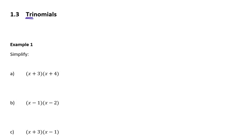And now we're starting my favorite, which is a trinomial. A trinomial is any algebraic expression with three terms, because the prefix tri means three. Now any algebraic expression with three terms is called a trinomial, except not every trinomial can be factorized the way we're going to factorize.